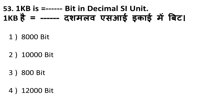Next question: one kilobyte is how many bits in decimal SI units? One kilobyte is 1,000 bytes, and one byte equals 8 bits. So we multiply 1,000 by 8 — the correct answer is 8,000 bits. One kilobyte equals 8,000 bits.